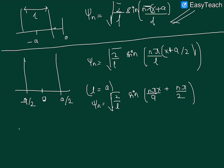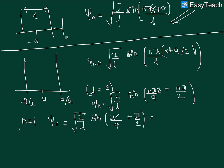For the ground state we put n = 1, giving ψ_1 = √(2/a) sin(πx/a + π/2), which simplifies to ψ_1 = √(2/a) cos(πx/a).